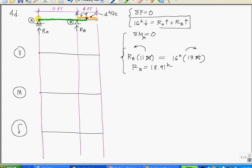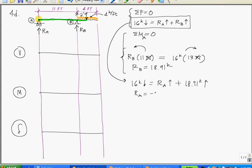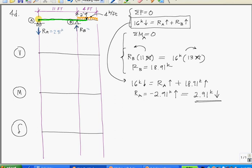However, now we can come back and plug into this equation. 16 kips down equals R sub A up plus 18.91 kips up. Let's get the calculator. And we have 16 minus 18.91 equals negative 2.91. Negative 2.91 kips up. It's the same thing as saying 2.91 kips down. So we've determined that R sub A actually works in the downward direction. R sub B is still up. 2.91, 18.91.